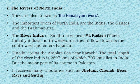The river Indus, also called Sindhu, rises near Mount Kailash in Tibet. Initially it flows north-westwards, then flows towards the south-west and enters Pakistan. Finally, it joins the Arabian Sea near Karachi. The total length of river Indus is 2897 km, out of which 709 km lies in India. But the major part of its course is in Pakistan. River Indus receives many tributaries. The main tributaries are Jhelam, Chenab, Biyas, Rabi and Satlaj.